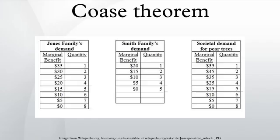In practice, obstacles to bargaining or poorly defined property rights can prevent Coasean bargaining. This theorem is commonly attributed to Nobel Prize laureate Ronald Coase during his tenure at the University of Chicago.